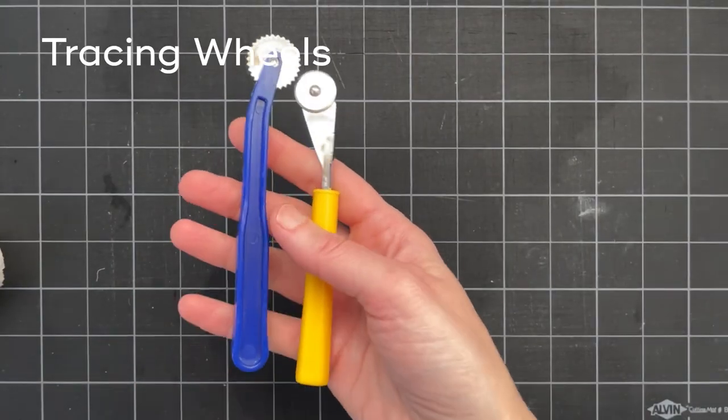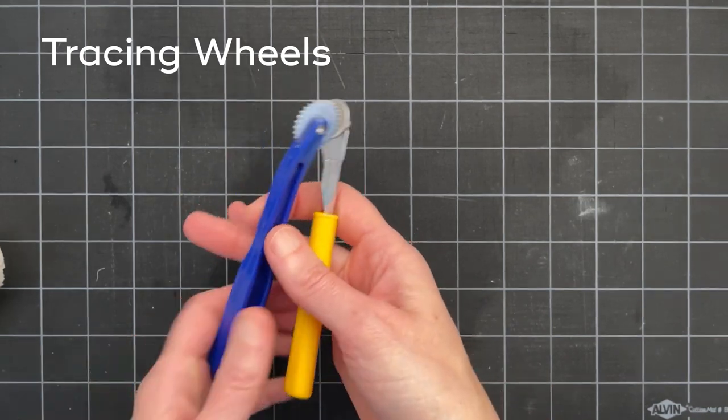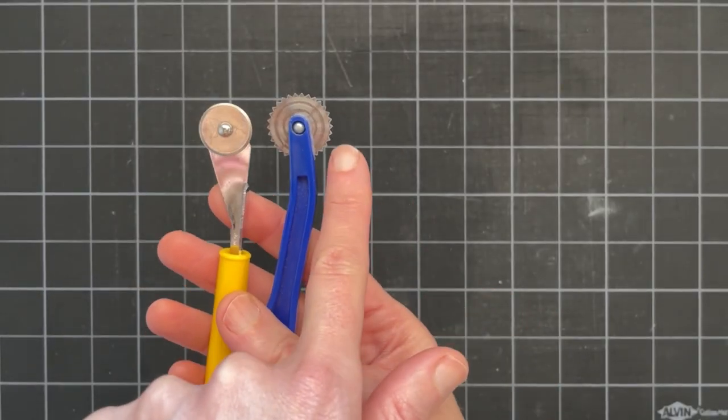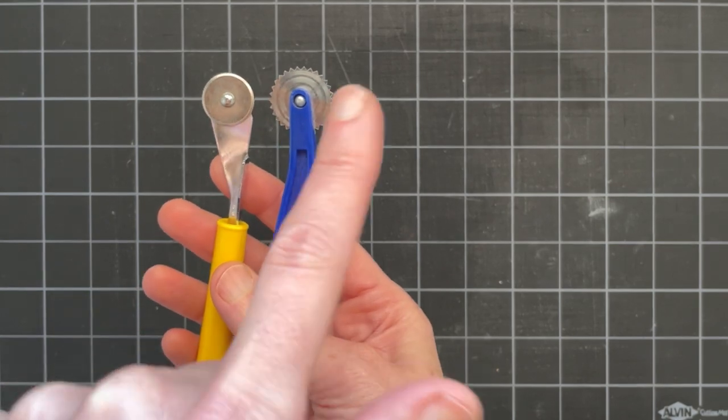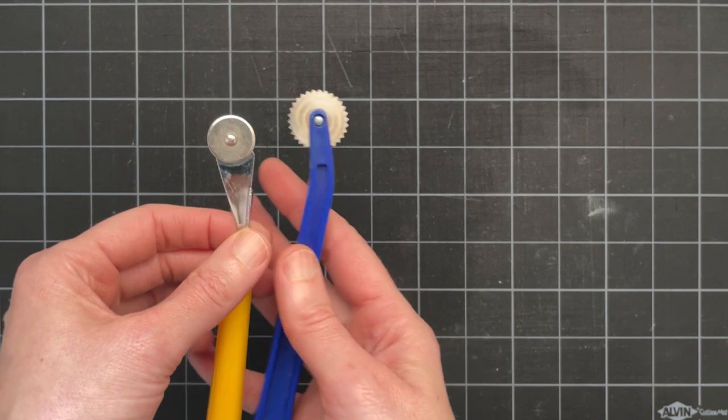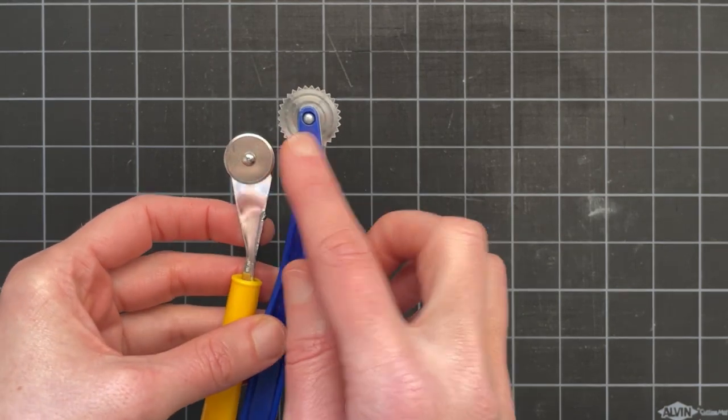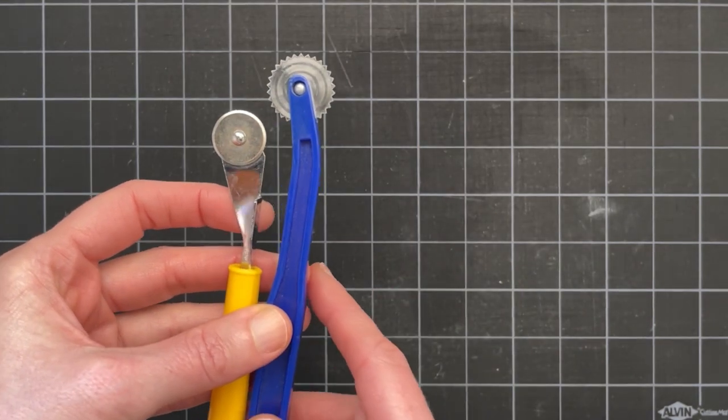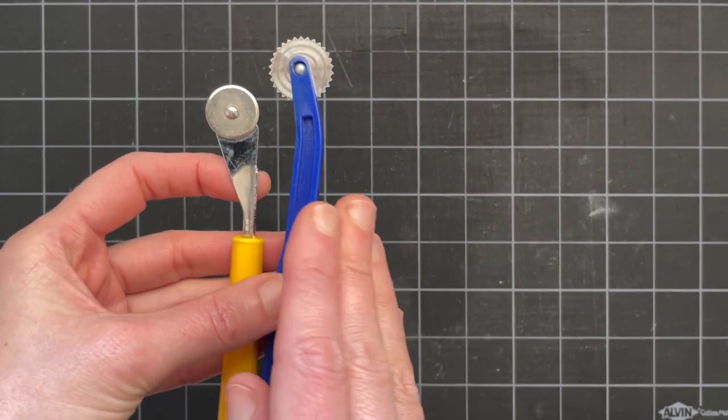These two tools are more traditional in dressmaking. Both of these tools are used in a similar way but you can also use this wheel with the serrated edge if you want to transfer patterns. You can trace a tissue paper pattern onto another piece of paper and the holes created by the serrated edge will give you a guideline for cutting out that traced pattern.